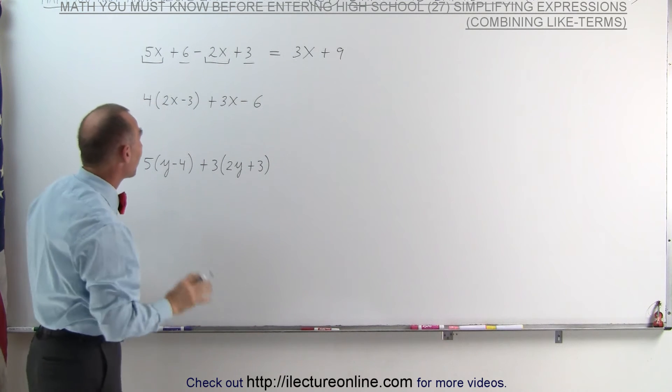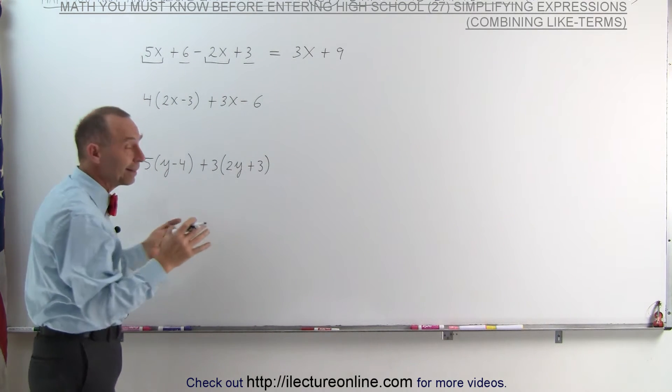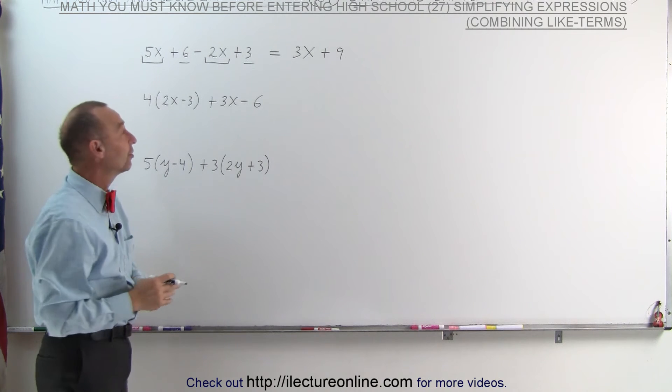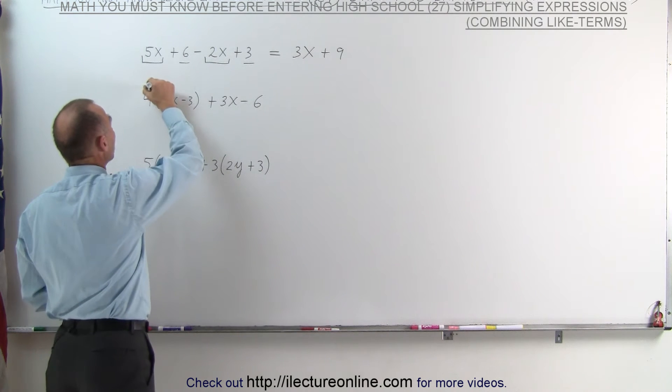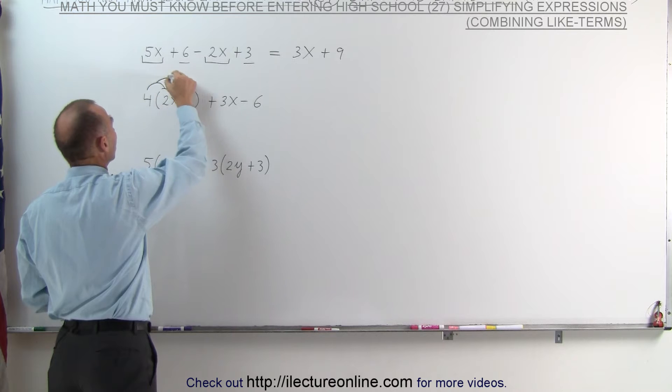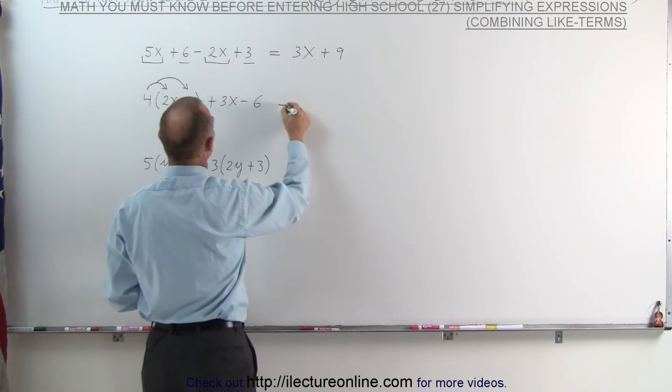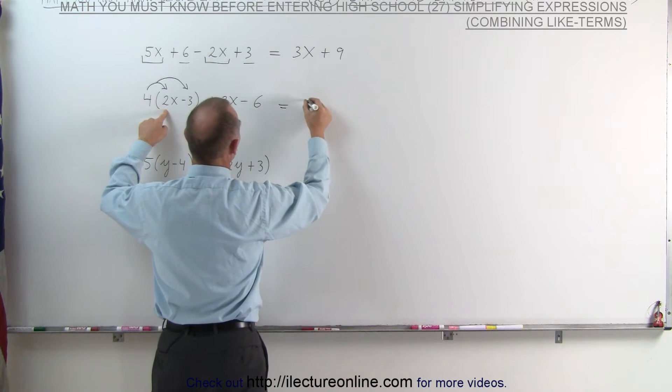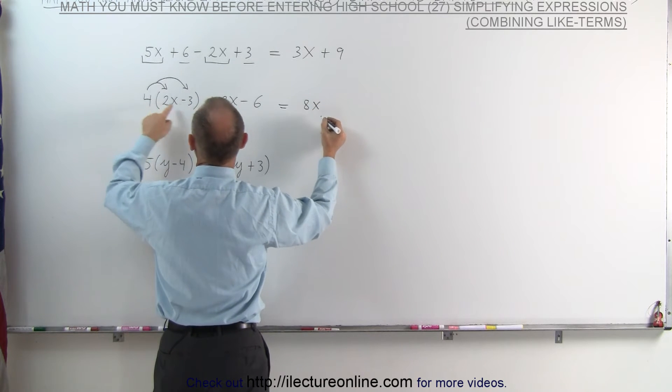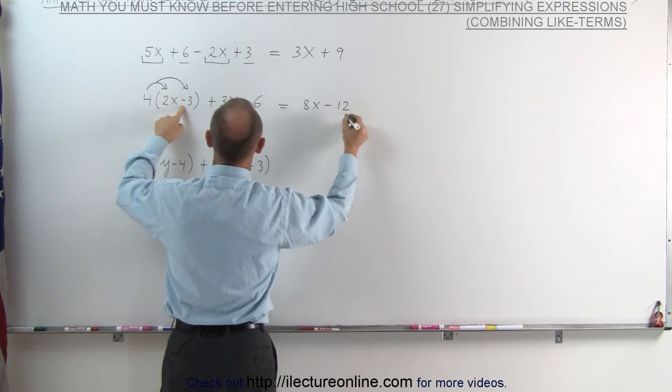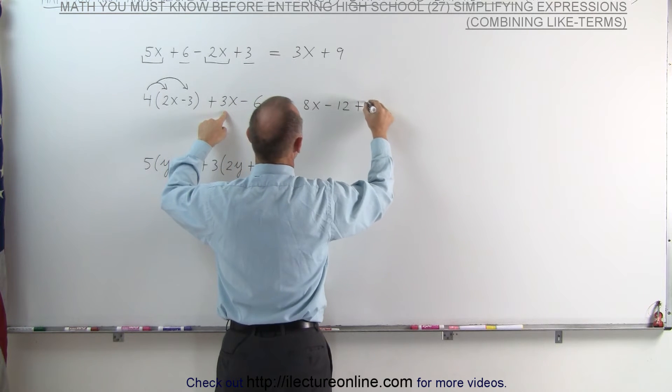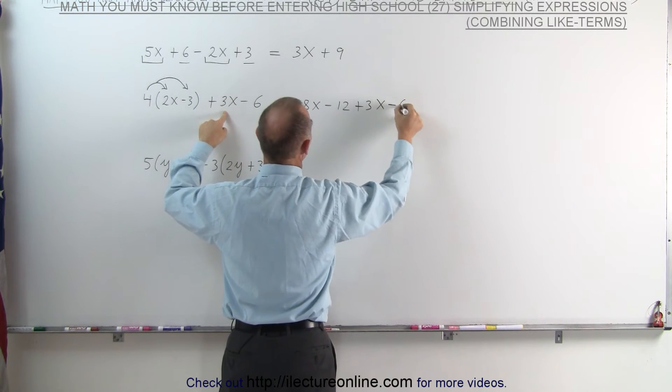On the second example, notice we have parentheses. Before we can combine like terms, we should get rid of parentheses first, which means we're going to distribute the 4 on the first term and the second term inside the parentheses. This can now be written as 4 times 2x, which is 8x, and 4 times minus 3, which is minus 12. The rest stays the same, plus 3x minus 6.